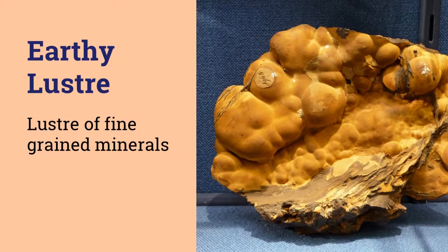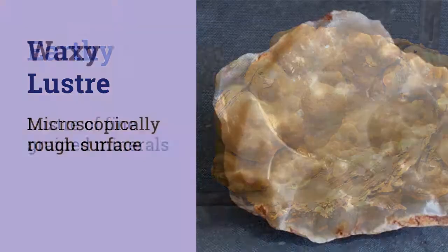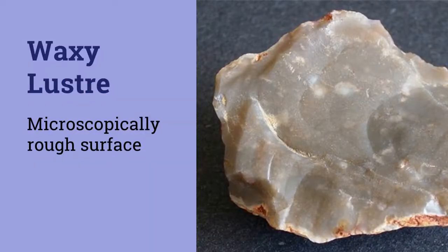Earthy lustre appears dull, as in soil. This lustre is characteristic of aggregates of very fine-grit materials, as in goethite and limonite. Finally, coming over to waxy lustre — waxy lustre appears as if the mineral is covered with a thin layer of oil. This lustre results from light scattered by microscopically rough surfaces, as in chert, milky quartz, nepheline, and halite.